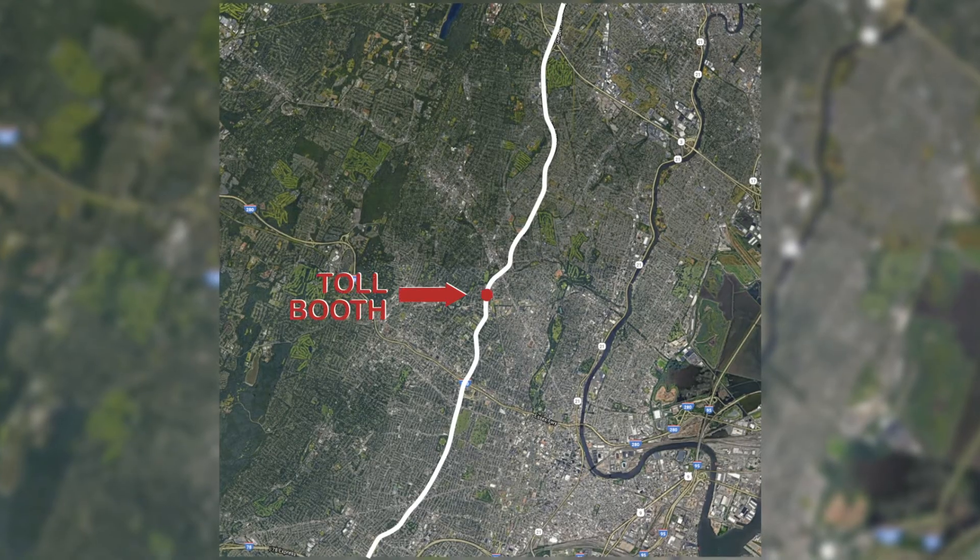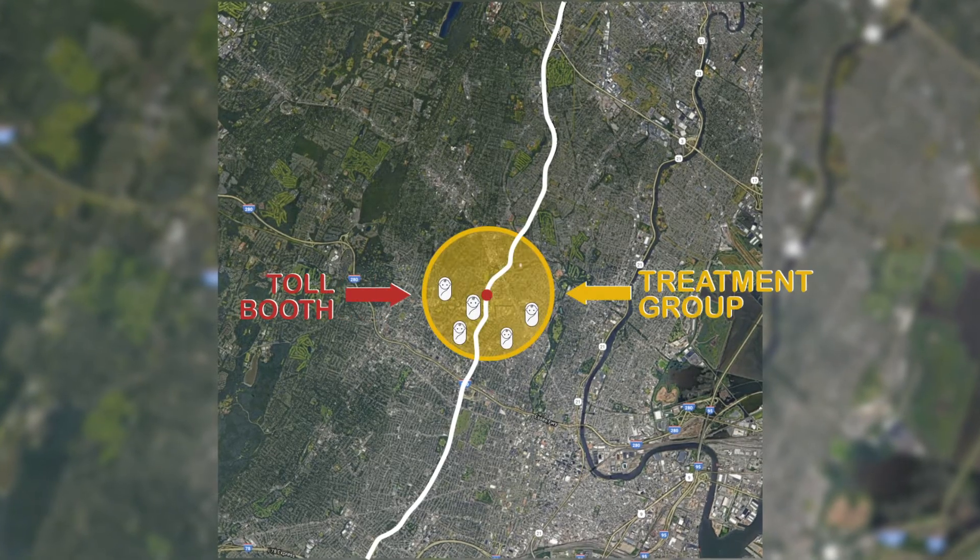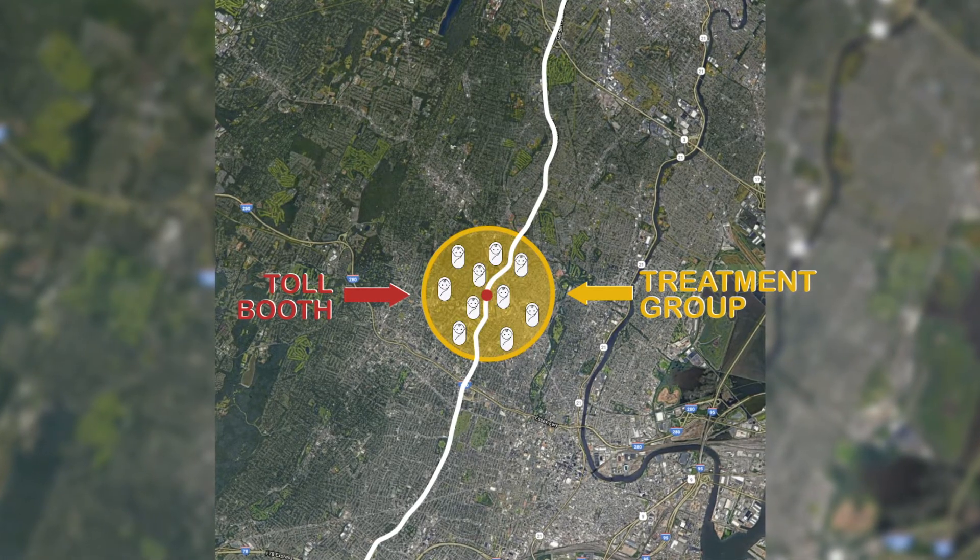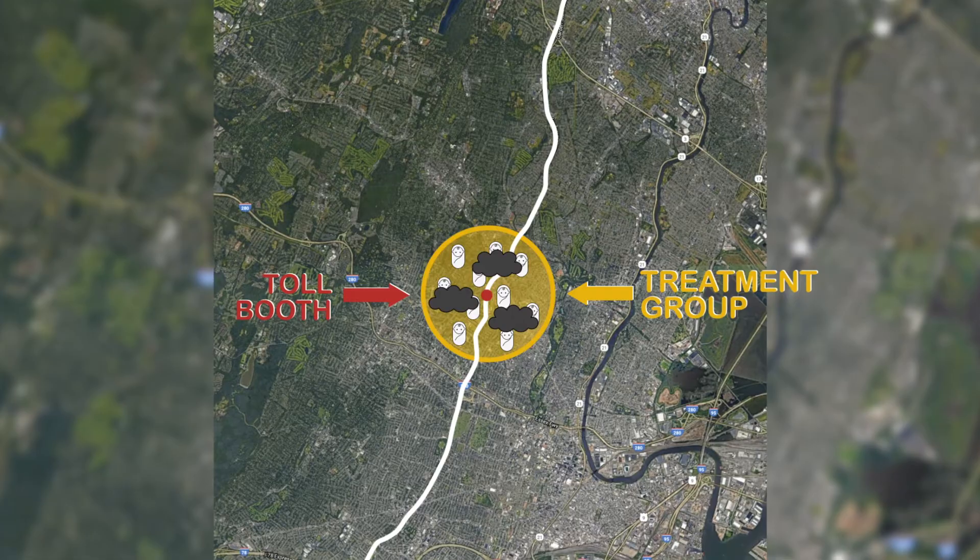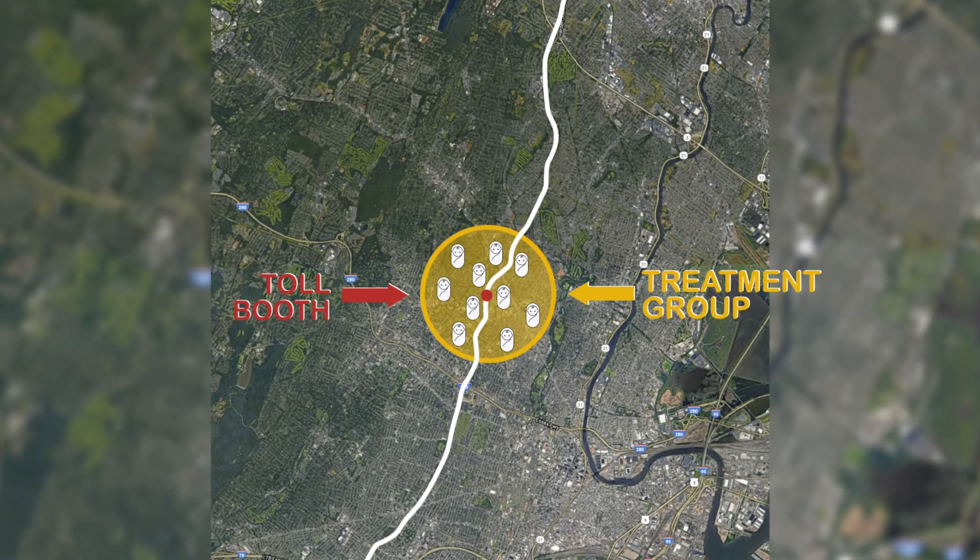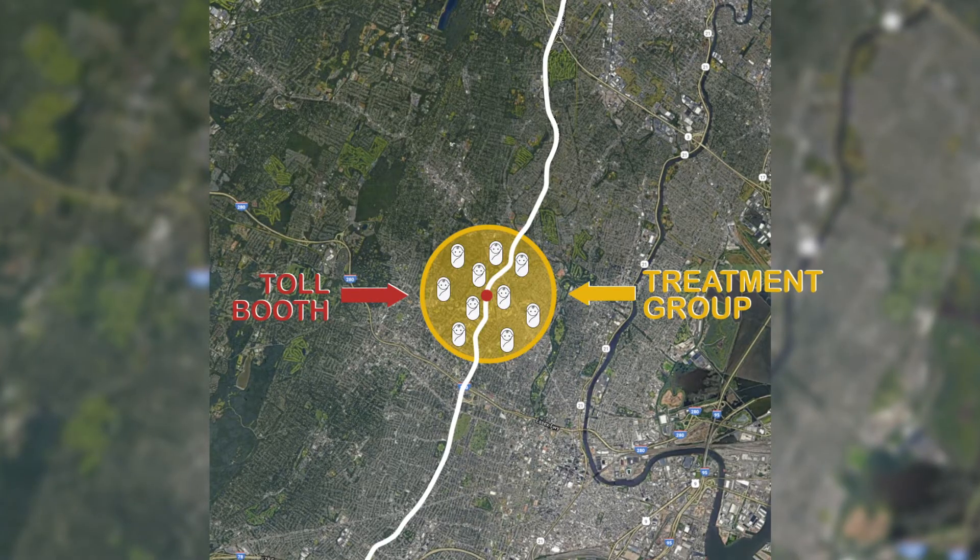Infants born near tollbooths, they're the treatment group, because these infants were exposed to much more pollution before EZPass than after EZPass. Other factors, however, they might be changing through time.